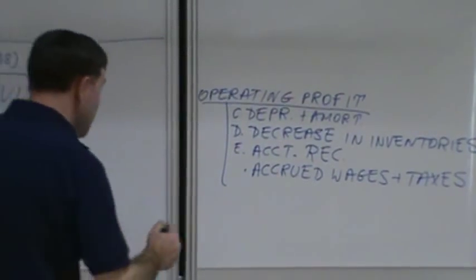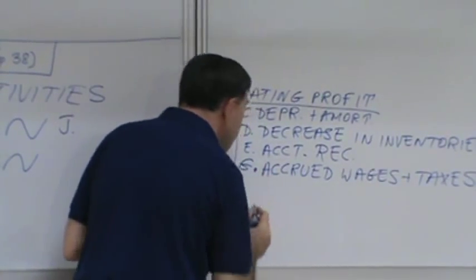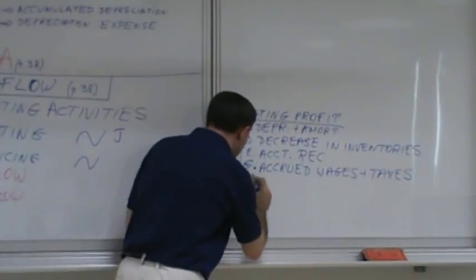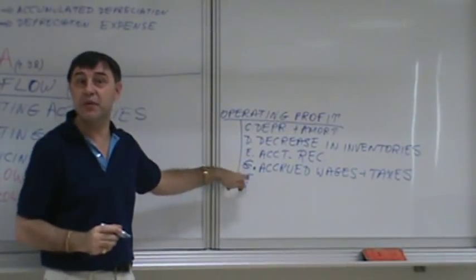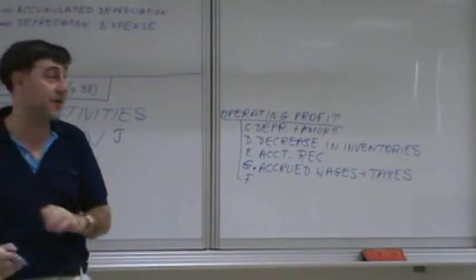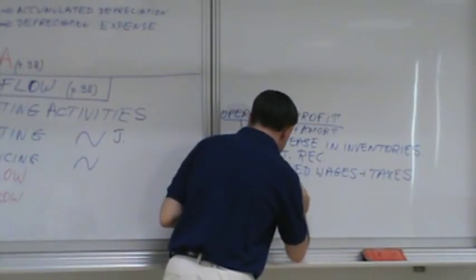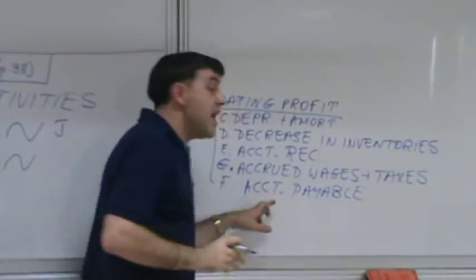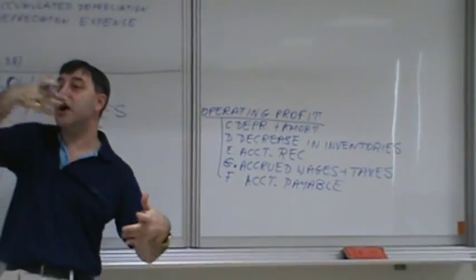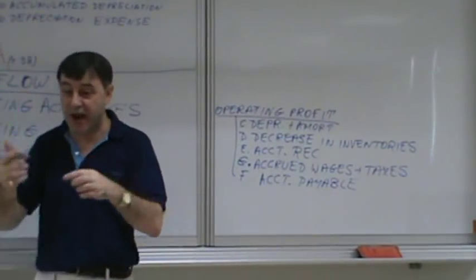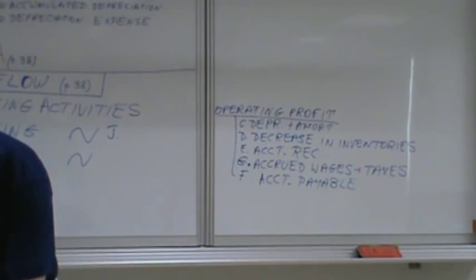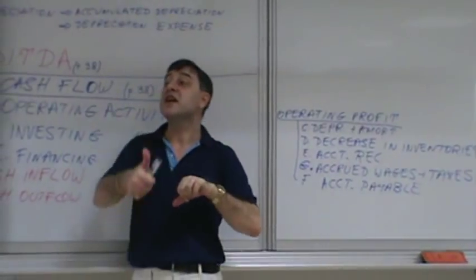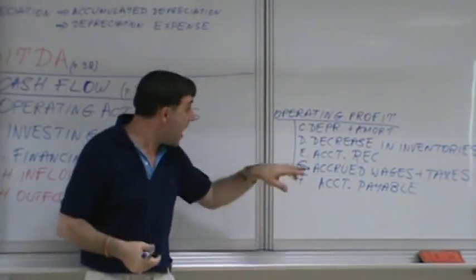Investing activities are associated with long-term assets — changes to property, plant, and equipment — not regular operating business. The cash flow from investing shows whether you purchased an asset or sold a house — whether cash was paid in or paid out.